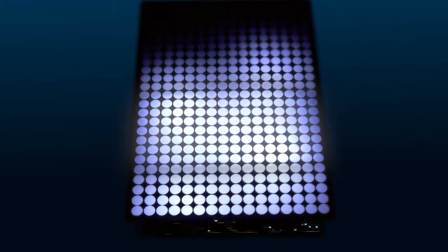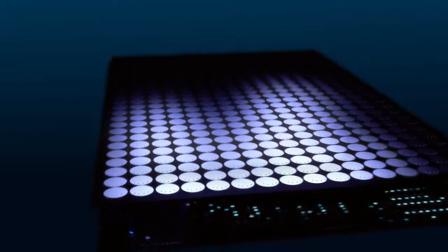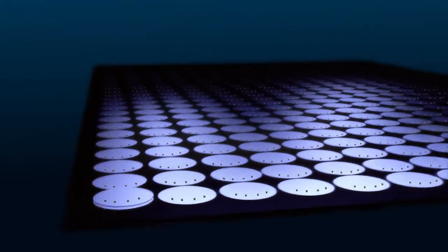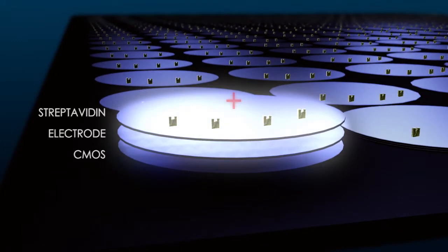There are 400 test sites on the Nanochip microarray, each controlled by 12 electrical connections. Specific sites are activated by applying a positive charge, thus attracting the negatively charged DNA molecules.